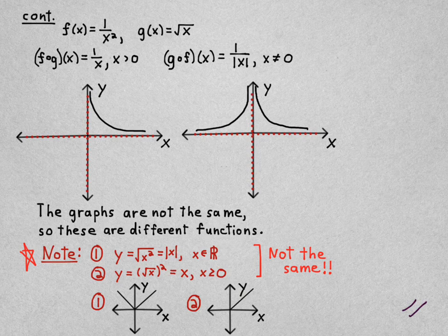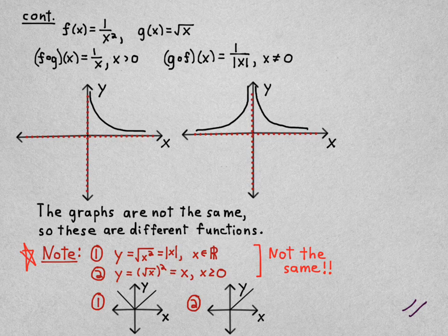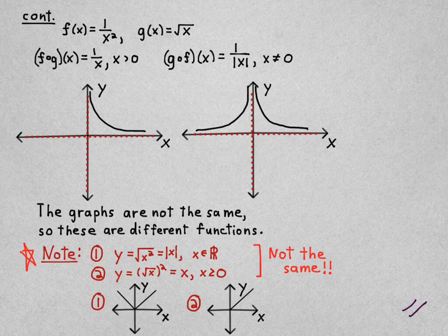And number two, y equals x with x greater than or equal to 0 is actually a ray. It's half a line. It's a ray from the origin. It includes the origin. I should have put a closed dot there.